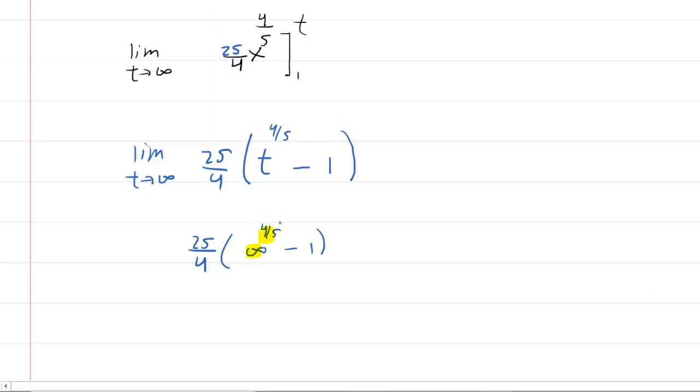And it turns out that that is still infinity. We could see this perhaps in a couple of different ways. We could plug on our calculator some very large numbers. We could take any large number and raise it to the 4 fifths. And you would see that the result is still a very large number. So the larger the number gets, the larger the number raised to the 4 fifths also gets. You could also graph x to the 4 fifths if you'd like to. And if you graphed x to the 4 fifths, you would see that the graph basically climbs this way. So you can see that as x gets bigger, the y value also gets bigger because it keeps rising and rising. So a couple of different ways to understand that. But basically you end up with 25 fourths times infinity minus 1. Infinity minus 1 is still infinity. And 25 fourths times infinity is still infinity. So the answer to the integral is infinity.